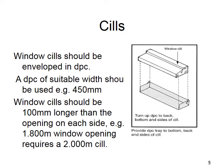Window sills should be 100mm longer than the opening on each side. So a 1.8 metre window opening requires a 2 metre sill.